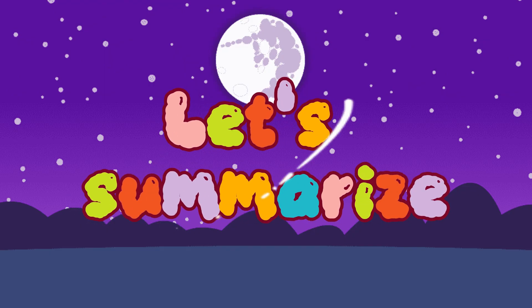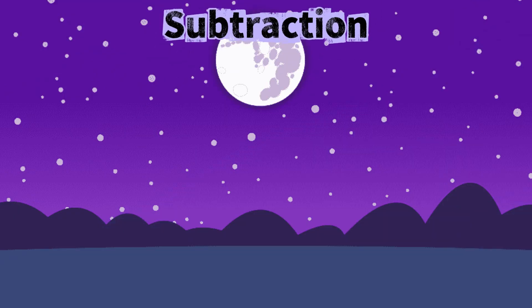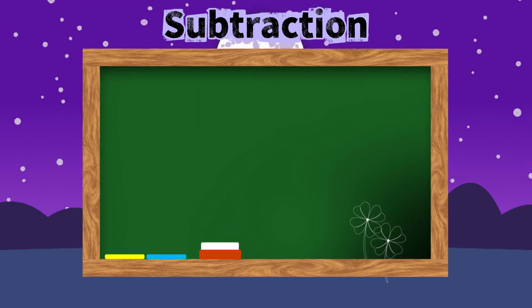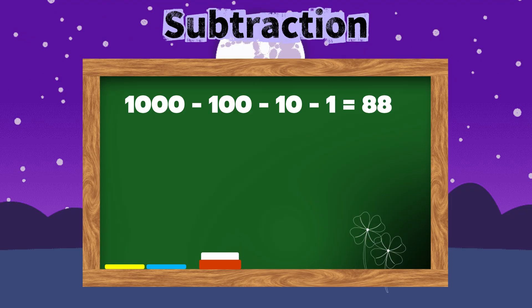Join me and let's summarize. Let's learn subtraction. 1,000 minus 100 minus 10 minus 1 is equals to 889.